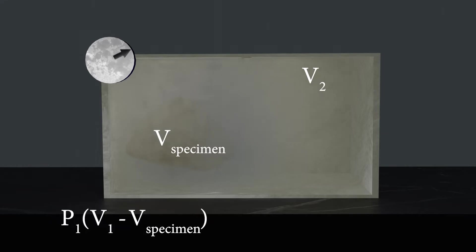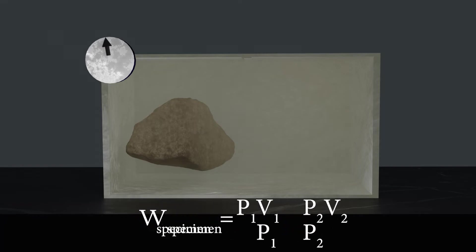Now open the chamber to a bigger volume. As the gas expands, the pressure drops. But the pressure times volume before and after the expansion remain the same. So this allows us to calculate the volume displaced by the specimen.